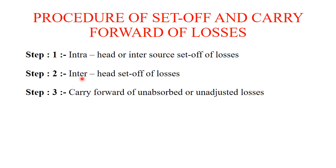The second step is inter-head adjustment. If the loss of one head cannot be absorbed within the same head, you go to other heads of income. For example, if you have a loss in house property and no income in house property, you can adjust it against salary, or business or profession, or capital gains, or other sources. Adjusting the loss of one head against other heads of income is called inter-head set-off of losses.